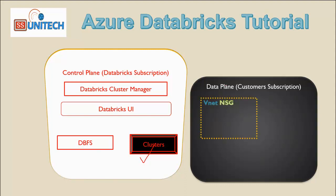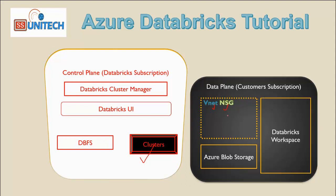Now in the data plane, it will have the VNet, Azure Blob Storage, and the Databricks workspace. While we are creating Databricks, behind the scenes it creates four services: first is the VNet, second is the network security group, third is Azure Blob Storage, and fourth is the Databricks workspace. Your DBFS will be hosted on Azure Blob Storage, as we can see here.